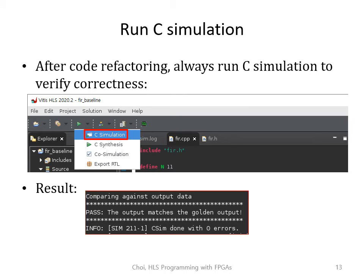We have changed our code to improve performance. But after code refactoring, it's always a good idea to run C simulation to verify correctness. Please click on the C simulation and wait for it to finish. If you see the result has passed, you can go to the next slide. If it has failed, please look back at your code and double check if the transformed code is functionally equivalent to the baseline code.